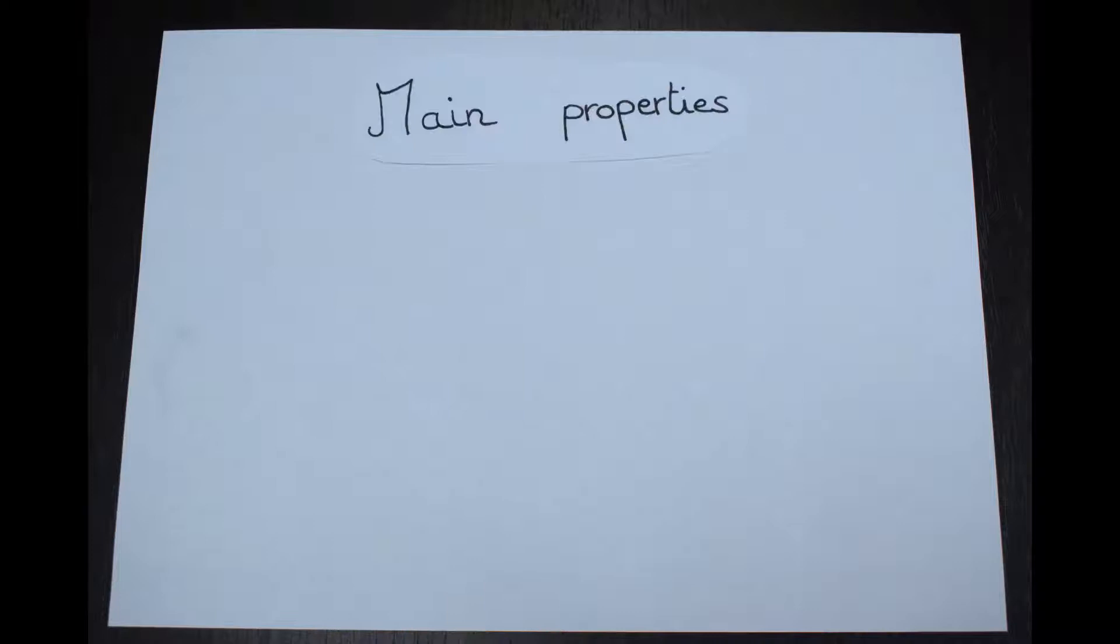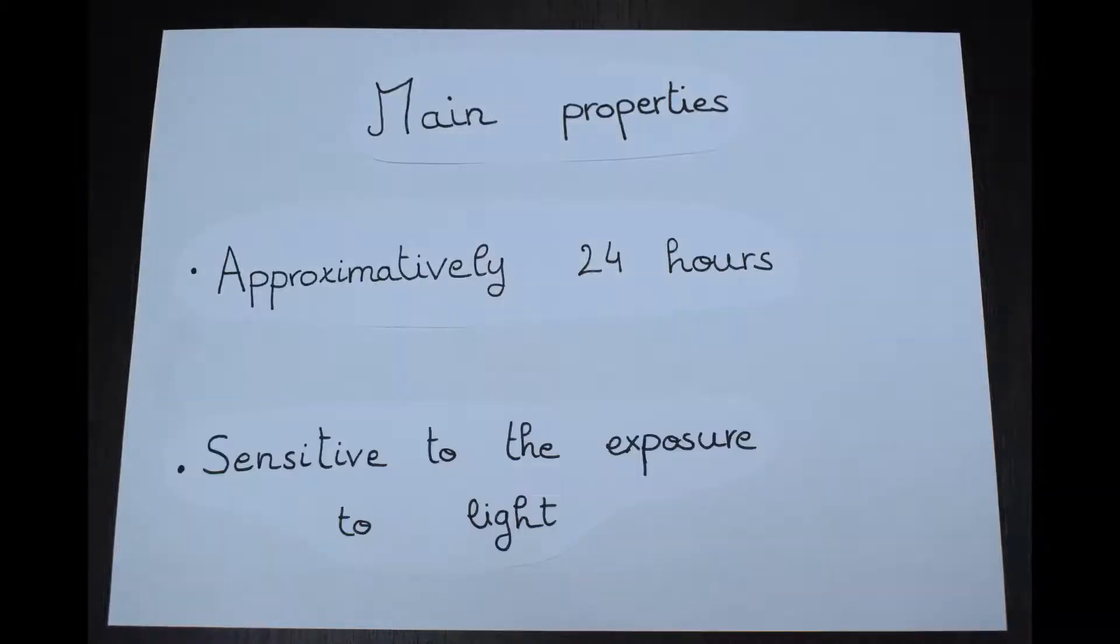There are several criteria that a biological circadian rhythm must follow. It has to last approximately 24 hours, and it can be reset by exposure to light.